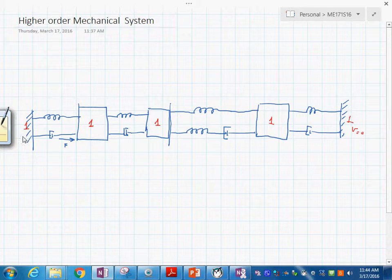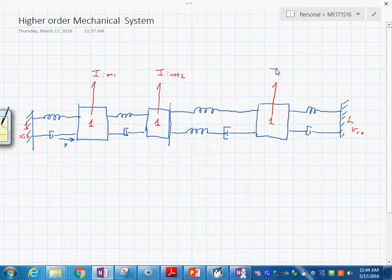What's the next step? On each one junction, see what elements experience that velocity. So we have this would be I with value m sub 1, you will have this I with value m sub 2, and you will have this I with value m sub 3.